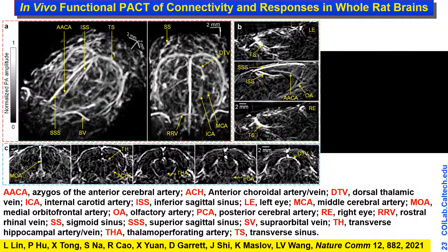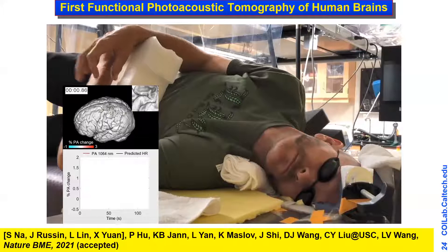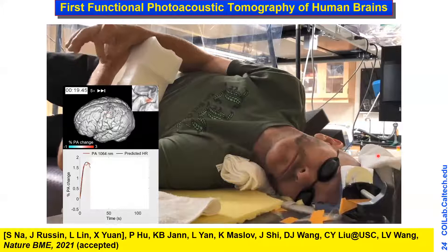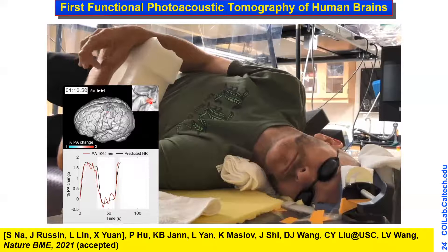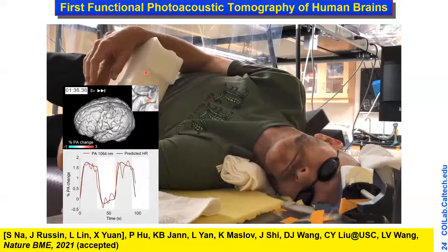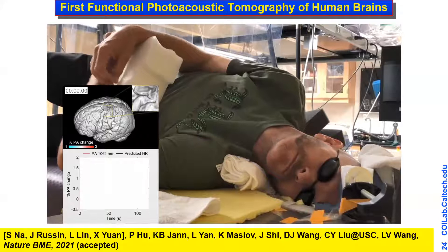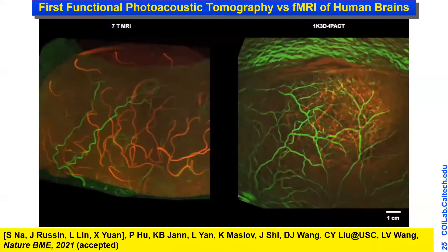Moving into human brain imaging, we started with hemicranial patients. During finger tapping you can see the brain activate; we wait for the next cycle and see the brain activation. This is the first functional photoacoustic tomography of humans. On the next slide our collaborating surgeon explains the detailed comparison, with 7T MRI on the left and functional PAT on the right.